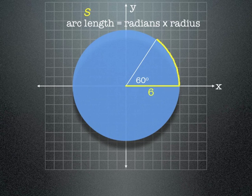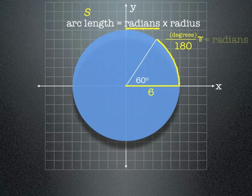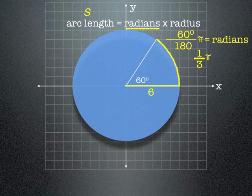So arc length is equal to radians times radius, which is 6. So the radians is degrees divided by 180, pi is equal to radians. In our case, we have 60 degrees divided by 180, which is 1 divided by 3 when we simplify it.